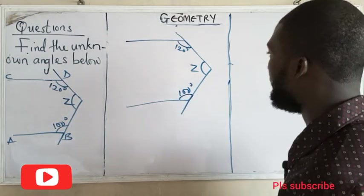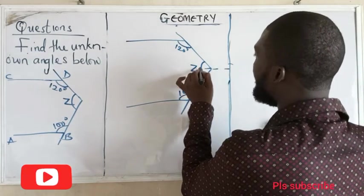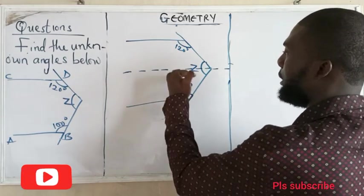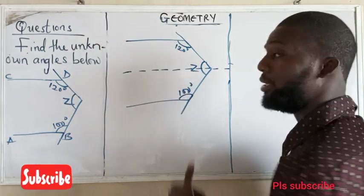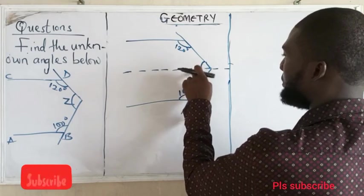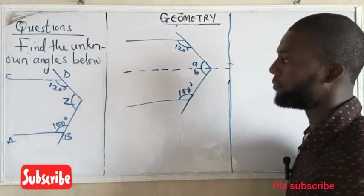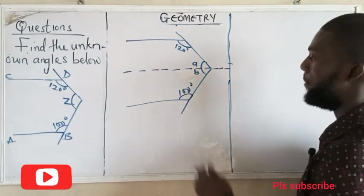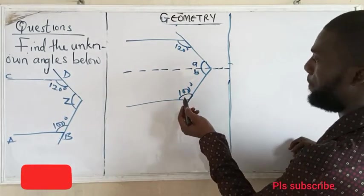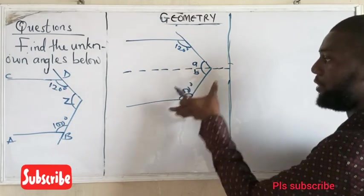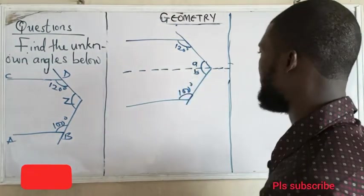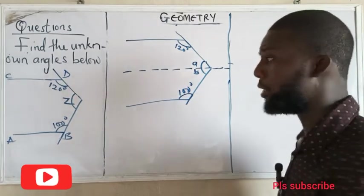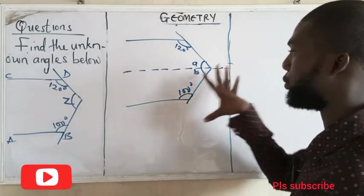The first thing you have to do is draw an imaginary line that cuts across, passing through this sharp point, so that the imaginary line will split this angle Z into two parts — I can name this A and this B. Once I draw an imaginary line across it, then it begins to make sense. I'm going to show two methods or two ways at which we can do this.